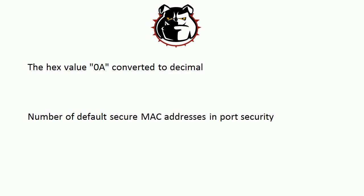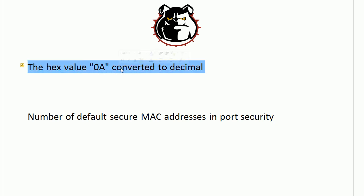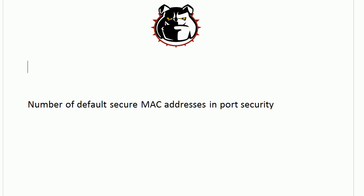Now, the hex value 0A versus the number of default secure MAC addresses — which is highest? That would be hex value 0A, because with two characters in hex the first is units of one and the second is units of 16. The A means 10, so we have 10 units of one, giving us a decimal value of 10. That leaves the number of default secure MAC addresses in port security, which is one — the last and lowest value.